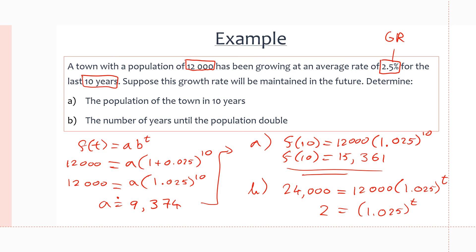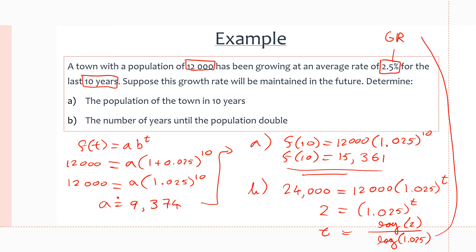To solve for T, we use logarithms — a concept you'll learn in the future. When a number equals another number to the power of an unknown exponent, T = log(2) ÷ log(1.025). Plugging that into a calculator gives approximately 28.1, which we round to 28 years. So in 28 years from when the population is 12,000, it will double to 24,000.